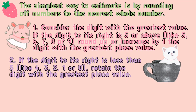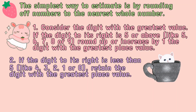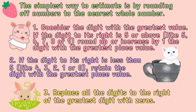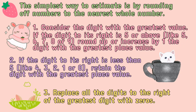Two, if the digit to its right is less than 5 — like 4, 3, 2, 1, or 0 — retain the digit with the greatest place value. And number three, replace all the digits to the right of the greatest digit with zeros.